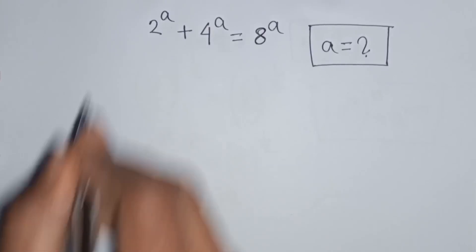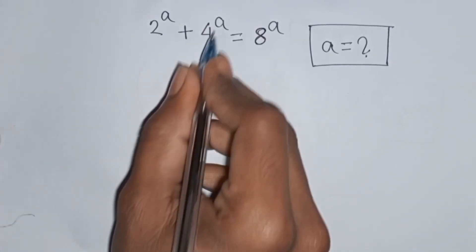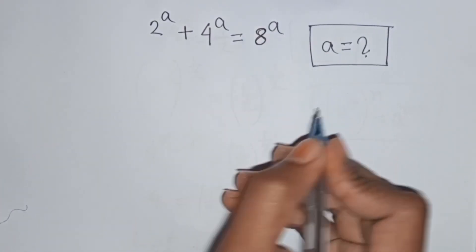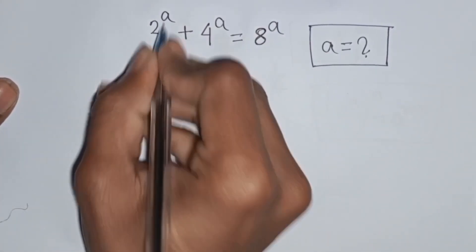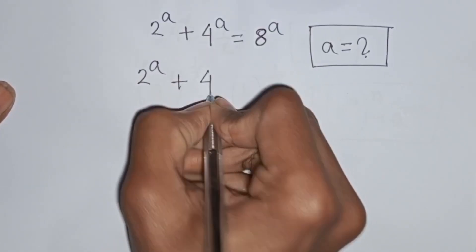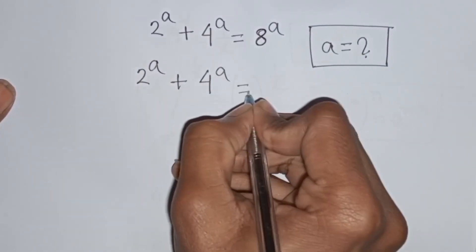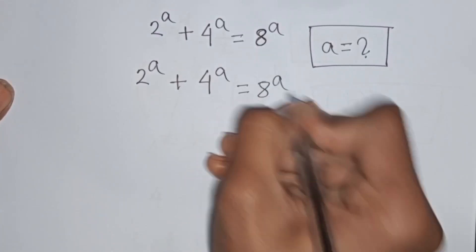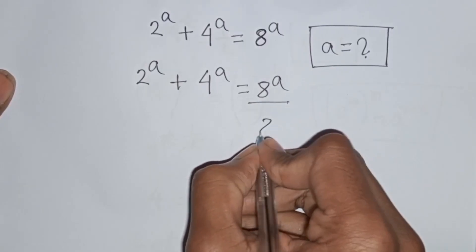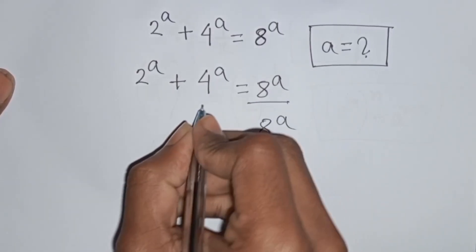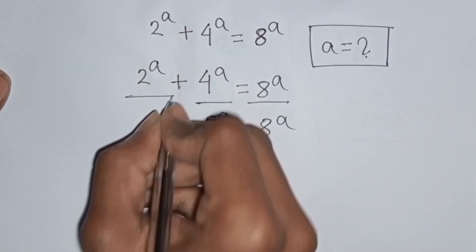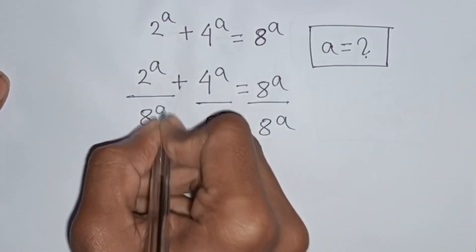How to solve 2^a + 4^a = 8^a. Find the value of a. We have 2 power a plus 4 power a is equal to 8 power a. Now we divide both sides by 8 power a.